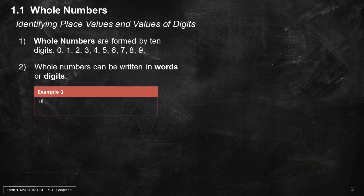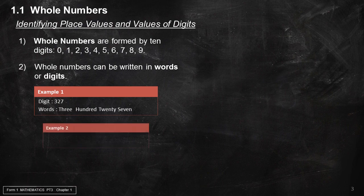Example 1 — digits: 3, 2, 7. Words: three hundred and twenty-seven (327). Example 2 also illustrates this concept.